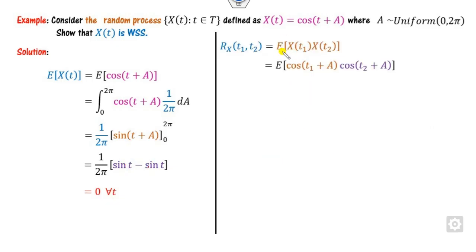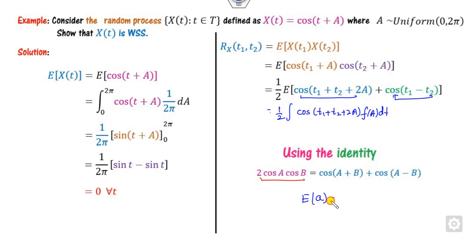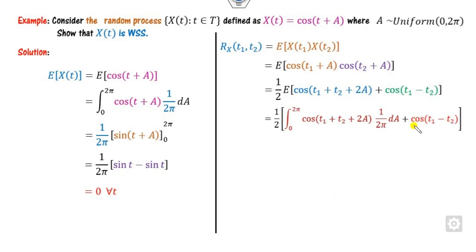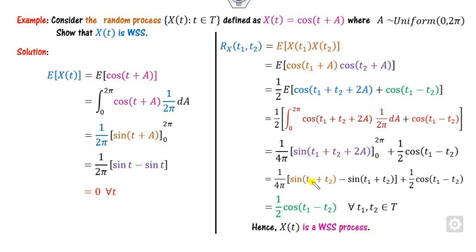For the autocorrelation R_xx(t1, t2), starting from the definition, substitute the cosine values and multiply and divide by 2. Using the identity cos(A)cos(B) = (1/2)[cos(A-B) + cos(A+B)], the term involving cos(t1 + t2 + 2A) integrates to zero over [0, 2π]. The remaining term is (1/2)cos(t1 - t2), which is a function of t1 - t2 only. Hence this process is weak sense stationary.